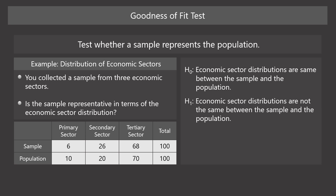In the goodness of fit test, we examine the deviance of the sample from the population. As the first step, we specify the null hypothesis as: economic sector distributions are the same between the sample and the population.